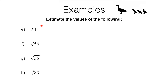Looking at this example, we've got 2.1 cubed. We know that 2 cubed is 2 times 2 times 2, which is 8. 2.1 cubed is going to be a little bit greater than that, so I'm going to estimate the answer is approximately equal to 9.